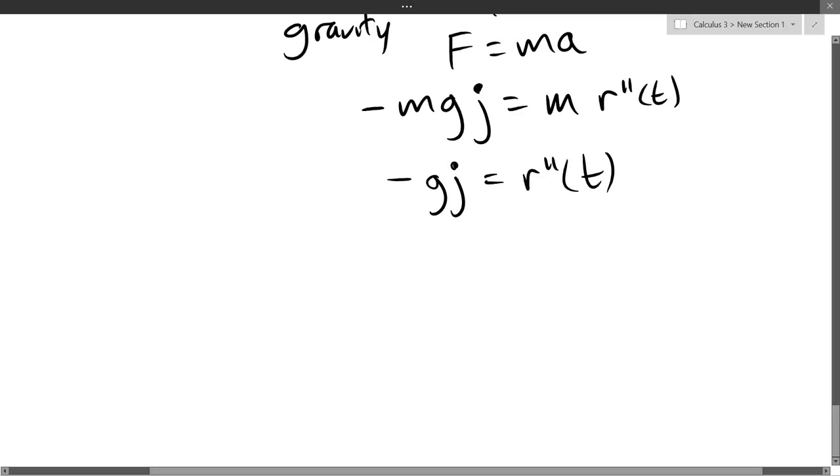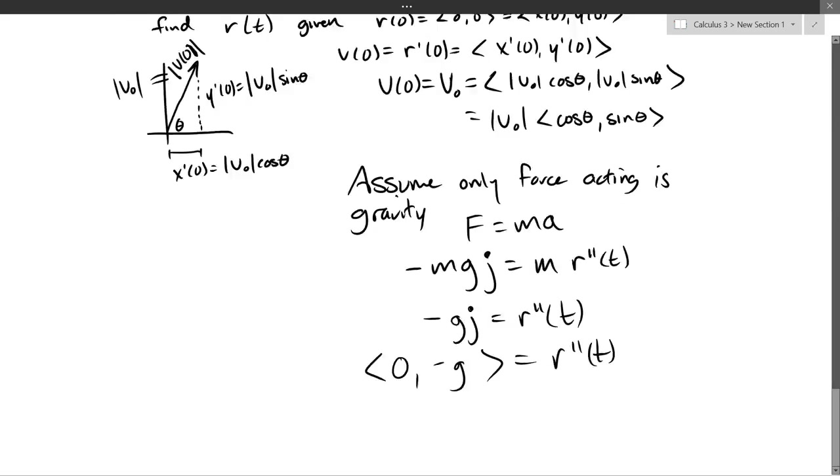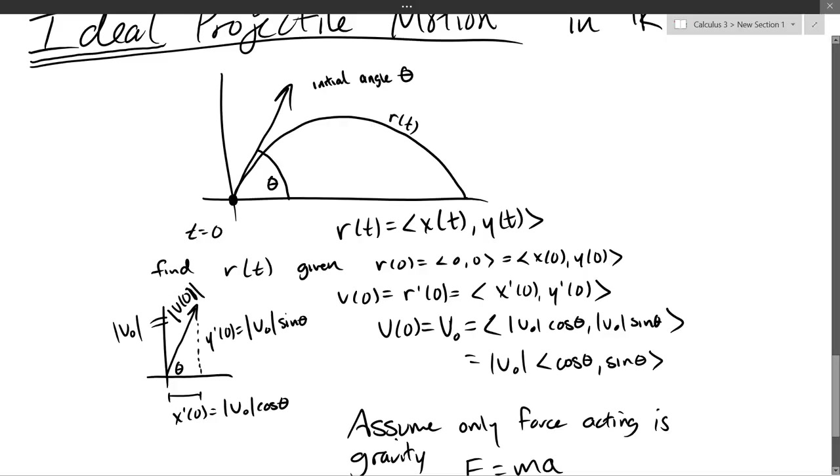All right. Let's write in diamond bracket notation. I don't really like ij notation. So we're only needing two coordinates. So we have 0i negative g is our second coordinate, or second component. And this is our double prime of t. All right. So now we're starting to form actual vectors here. So we got the acceleration.